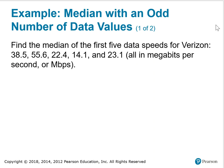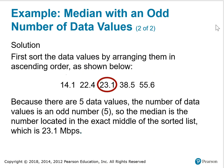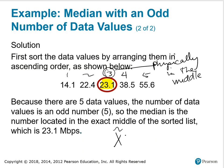For example, here is a data set, the Verizon data set, that has an odd number of data values, and we want to find the median. The first thing we do is sort the data values by arranging them in ascending or descending order. We chose to do ascending order and we look for the data value that's physically in the middle. If I count, this is the first, second, third, fourth, fifth data points; the third is physically in the middle. So that's what we're looking for is that physical middle when we look for the median. In this particular case, the median x-tilde is equal to 23.1 megabits per second.